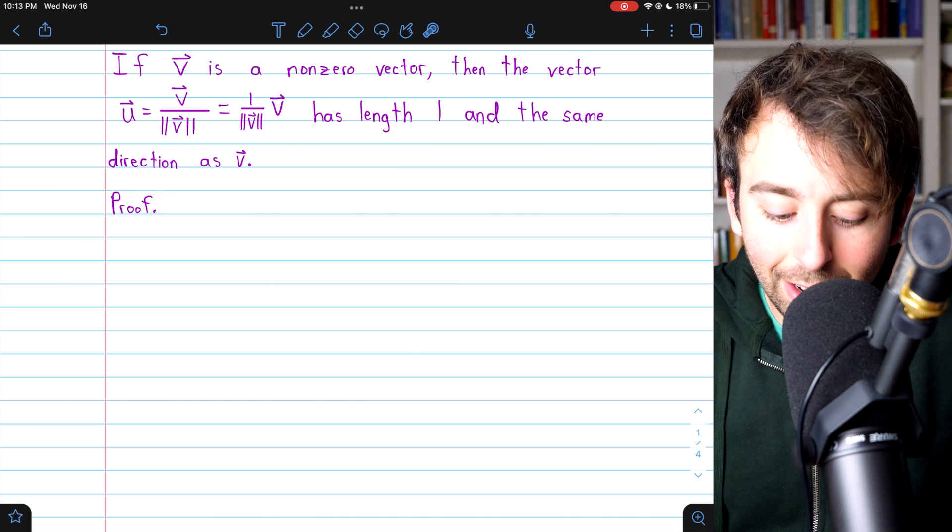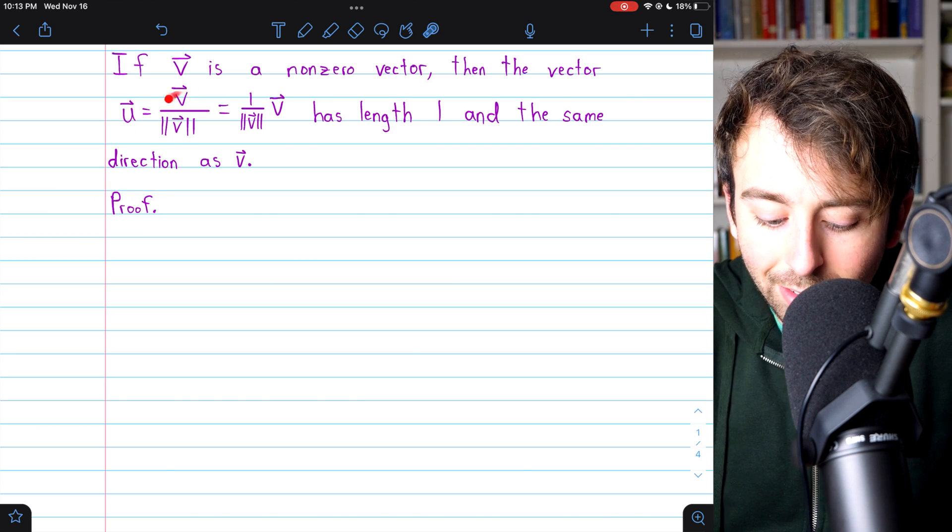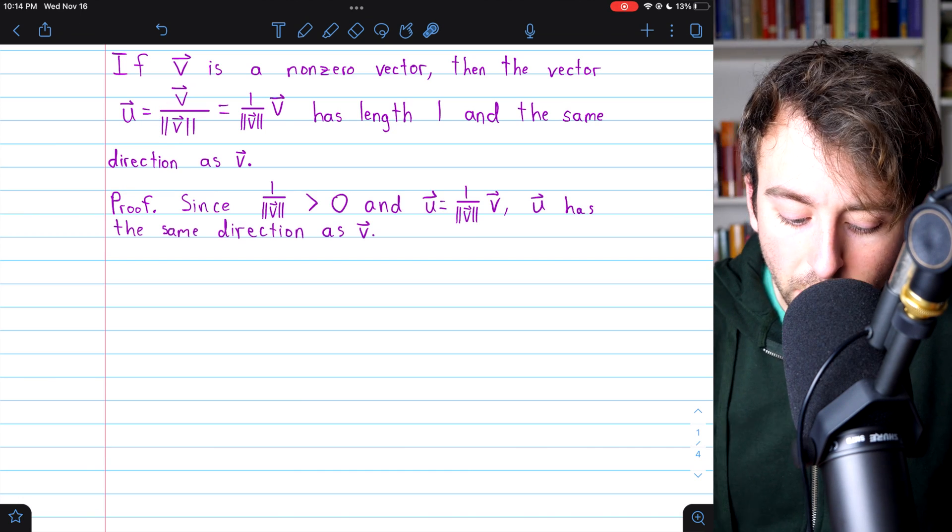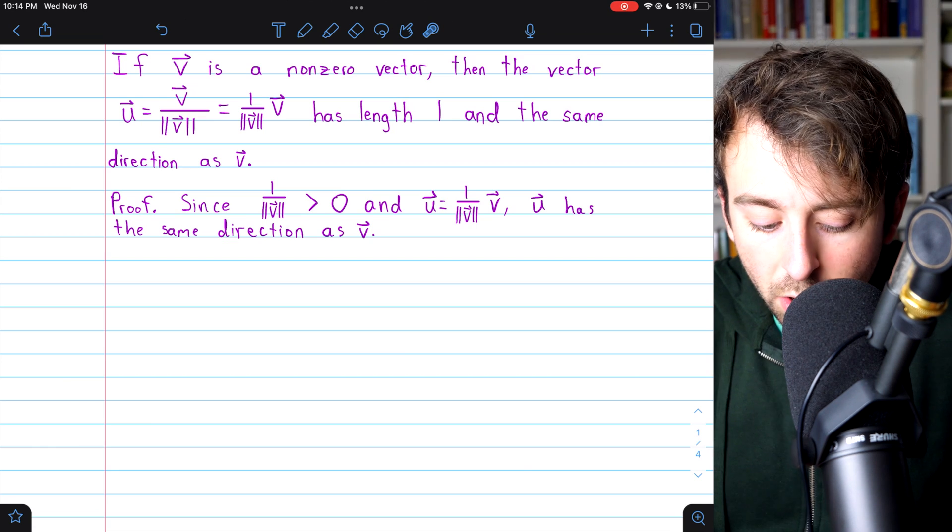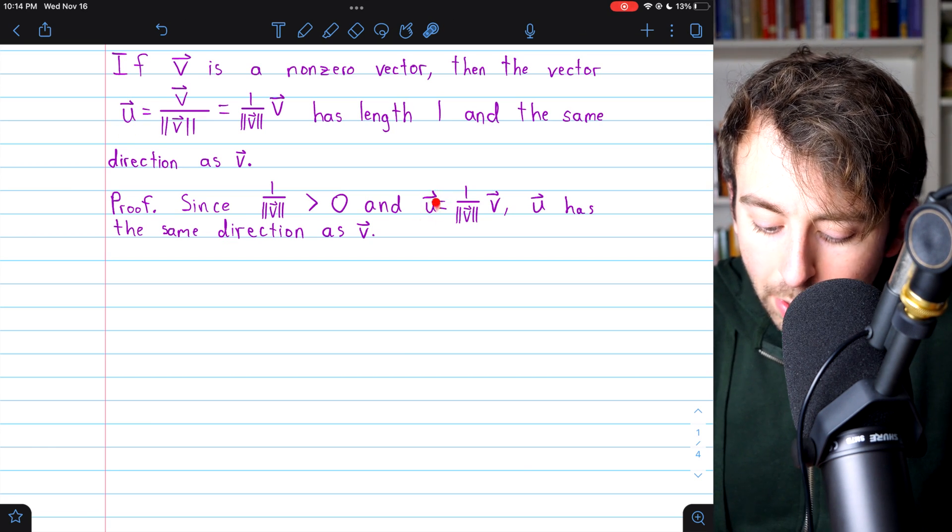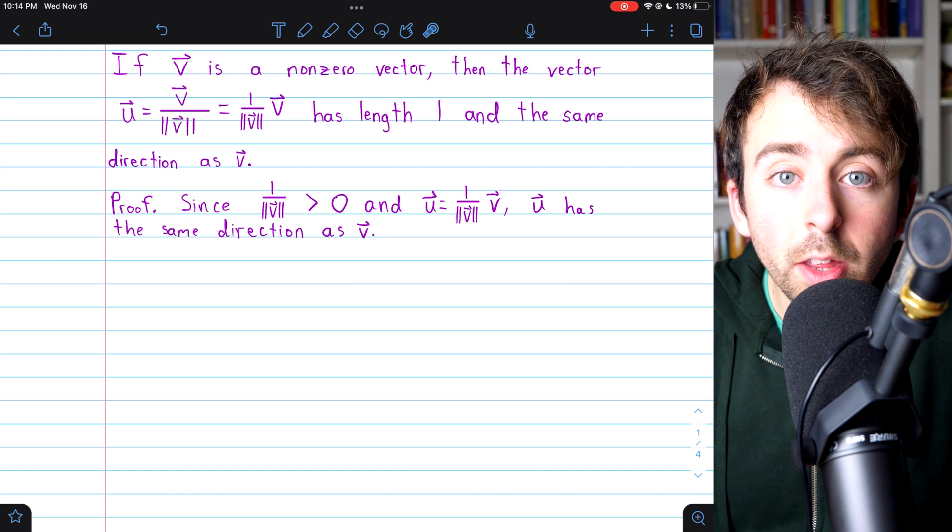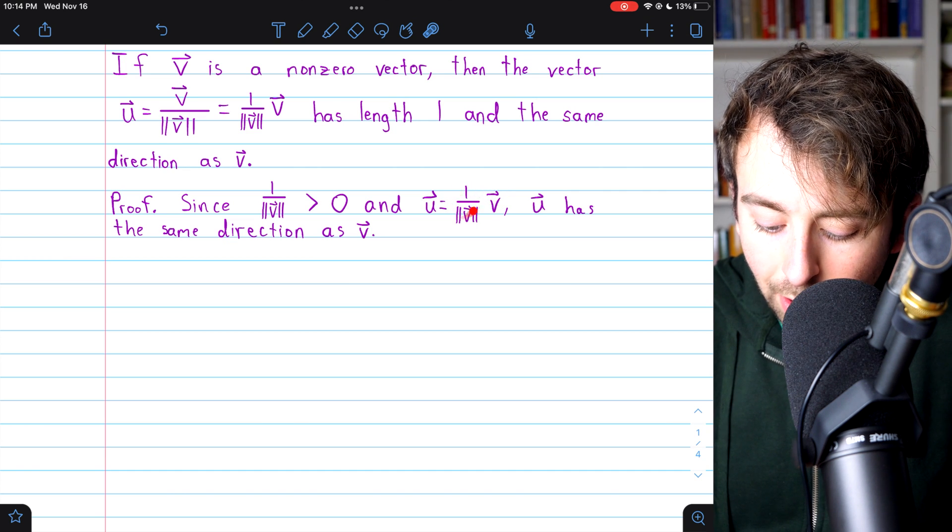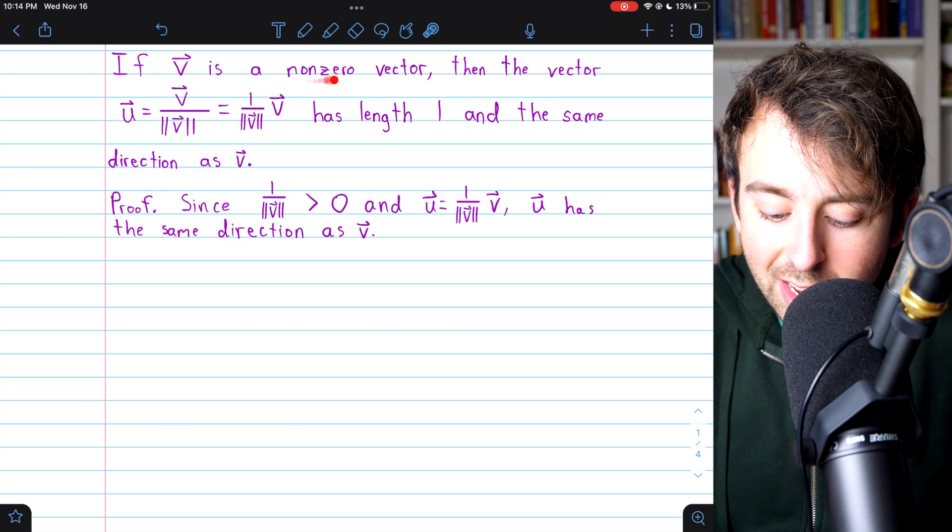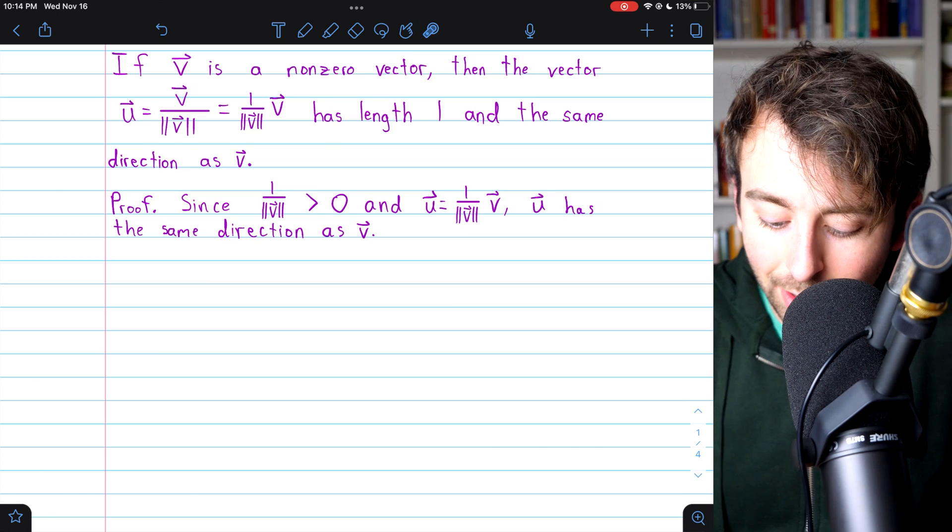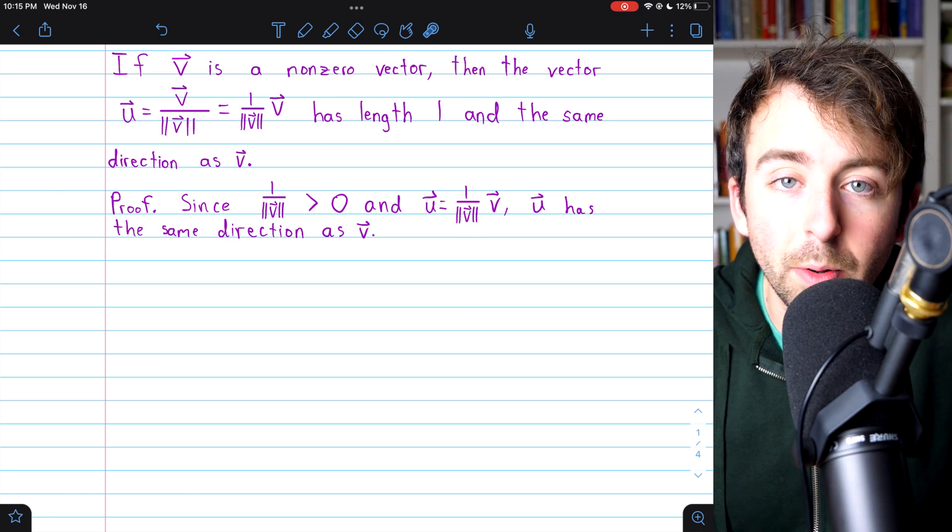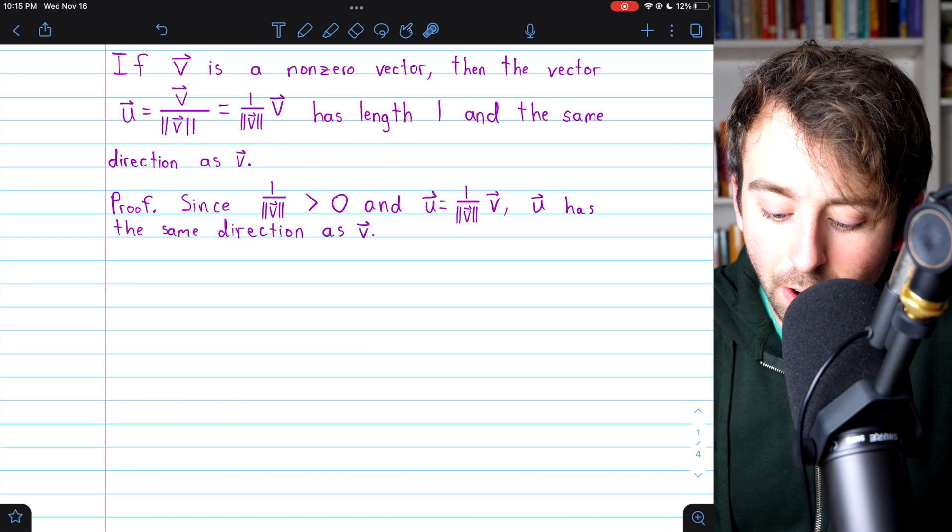Let's quickly prove these facts, that this vector will have the same direction of v and a length of 1. Beginning with the direction, we know that u has the same direction as v, because u is just the vector v multiplied by a scalar of 1 divided by its magnitude. Of course, all of this only works if v is a non-zero vector, because dividing by its magnitude can't be a division by zero.